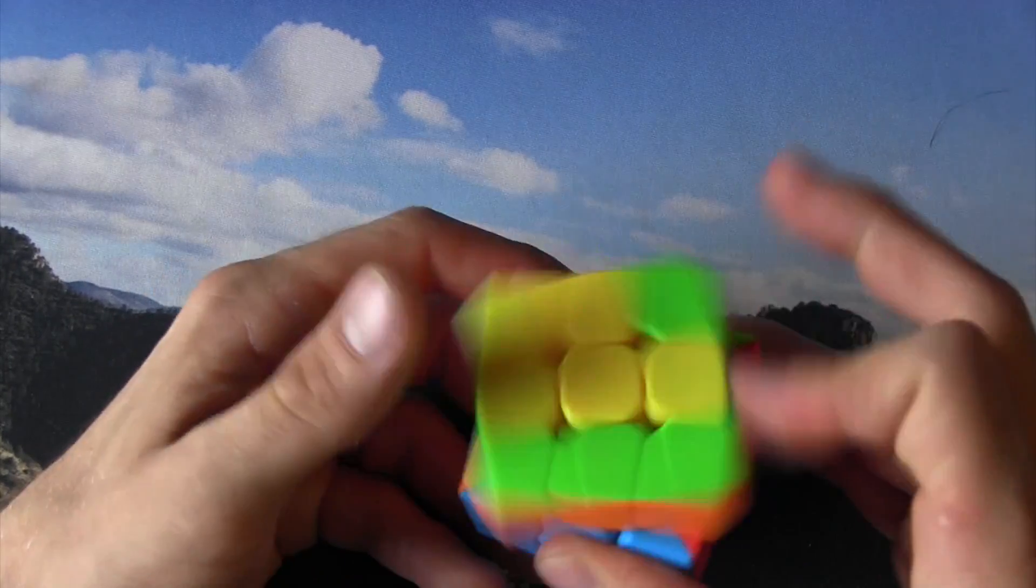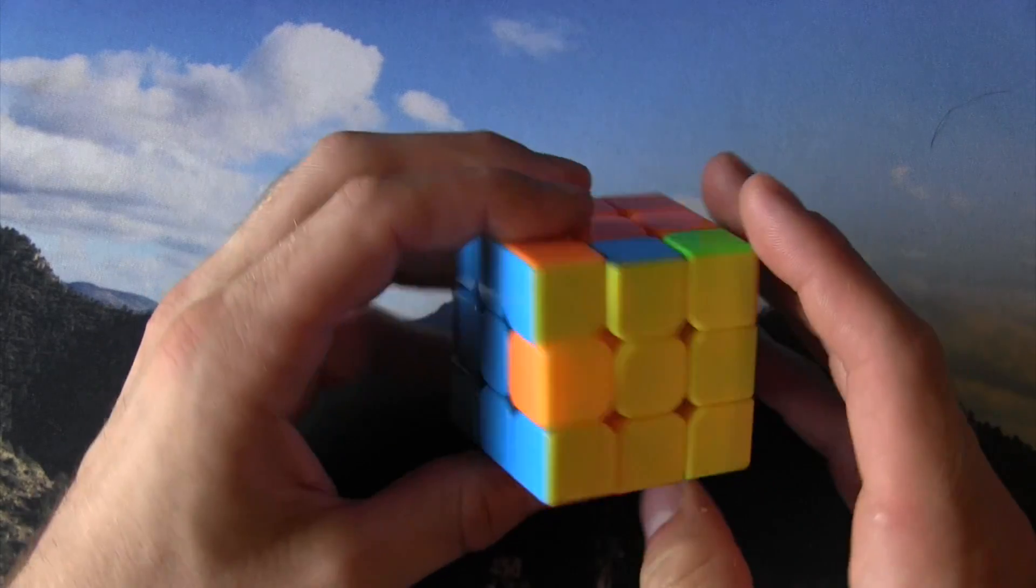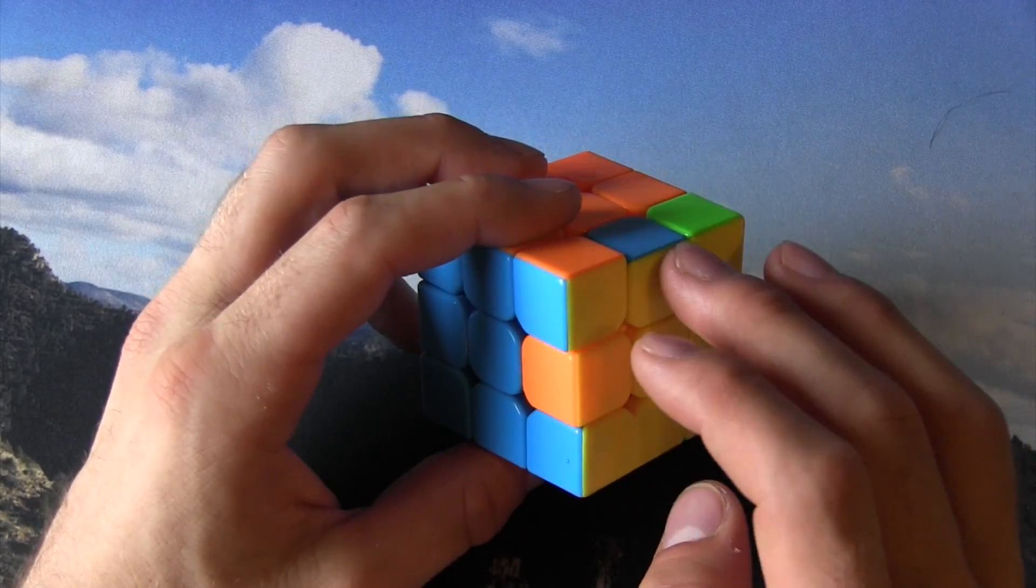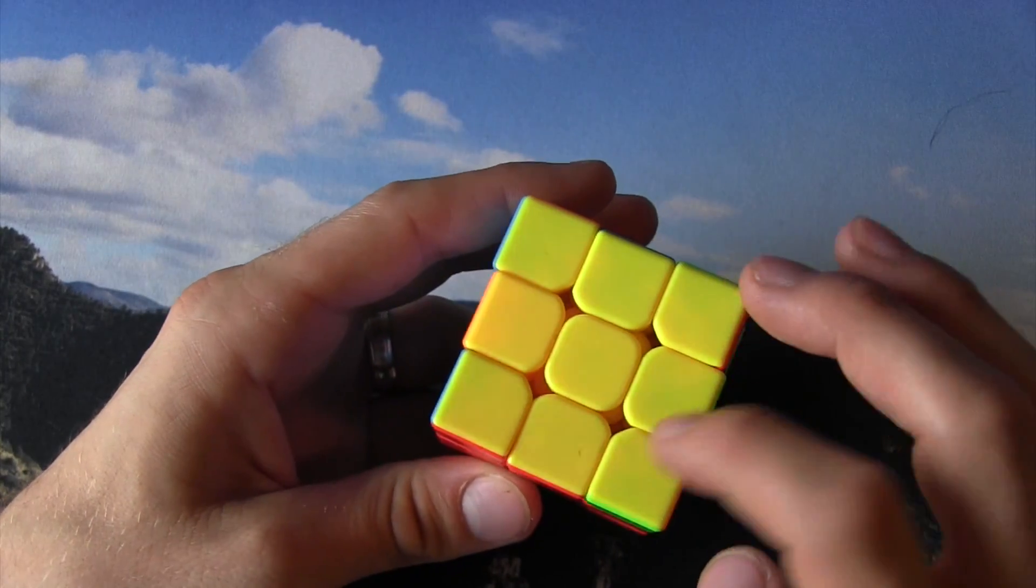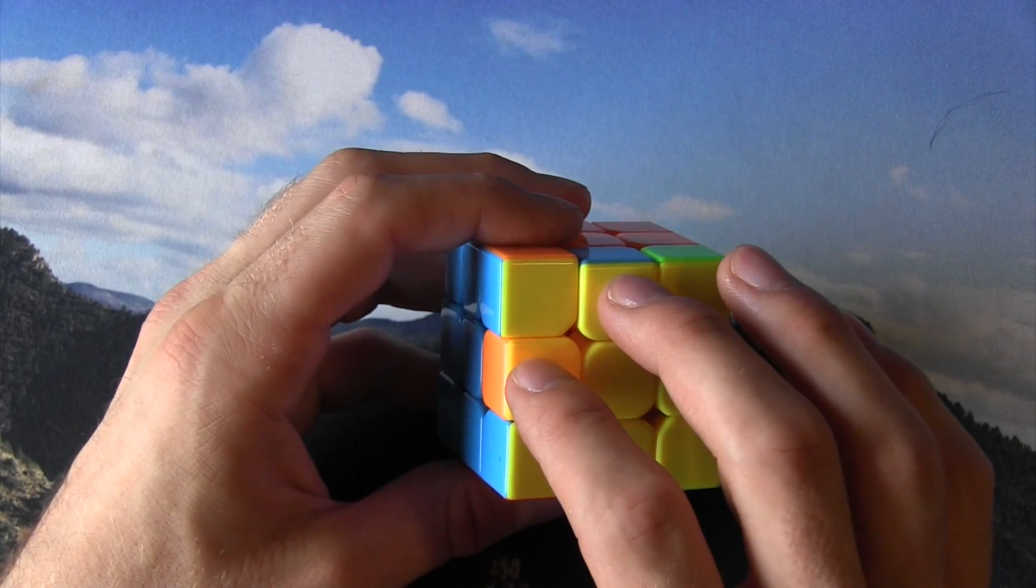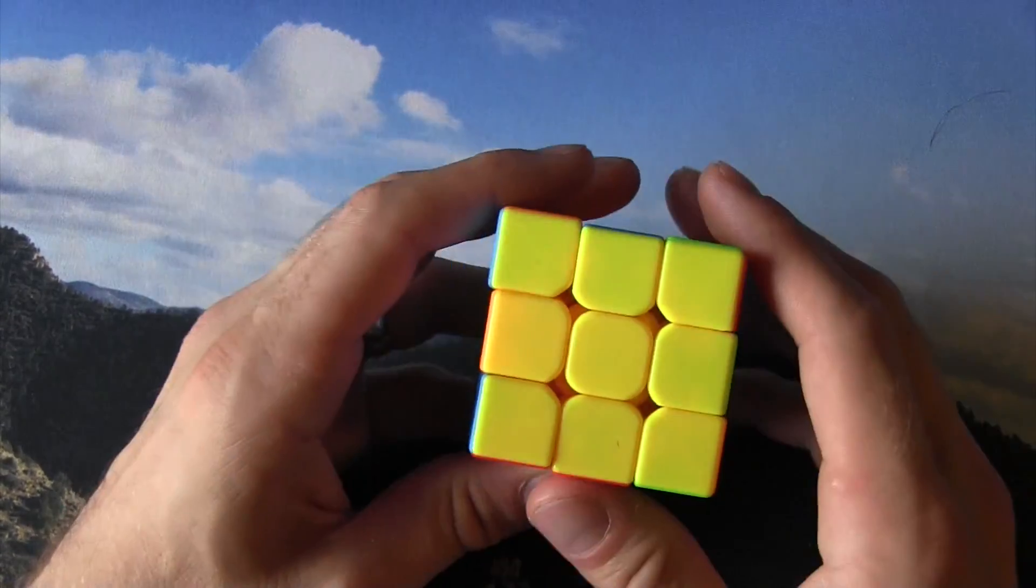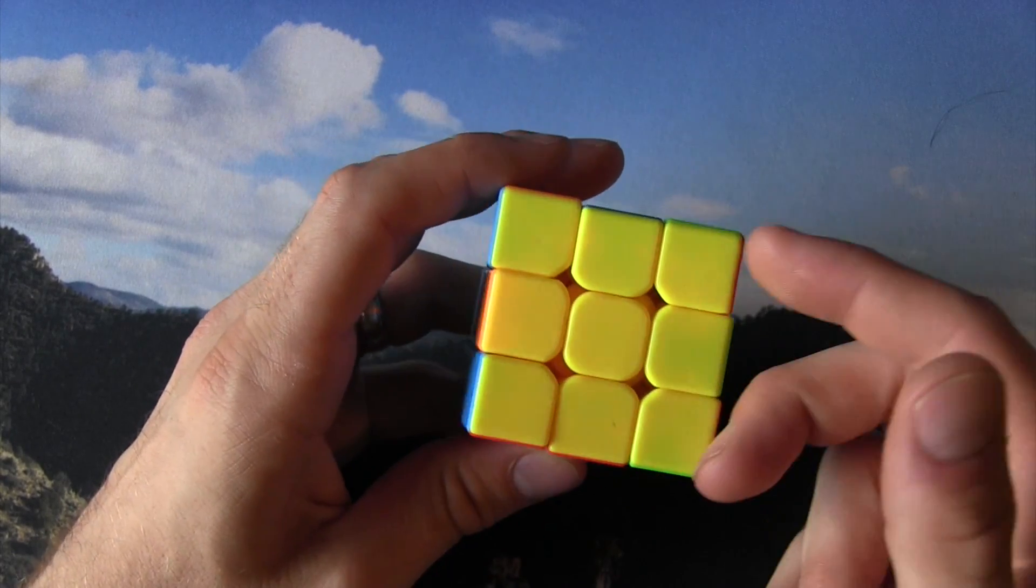Now the R permutation swaps these two edge pieces and these two corners. So what happens is since these are going to be out of place after doing your corners or an odd number of corners specifically, this will fix them and move these out of place.